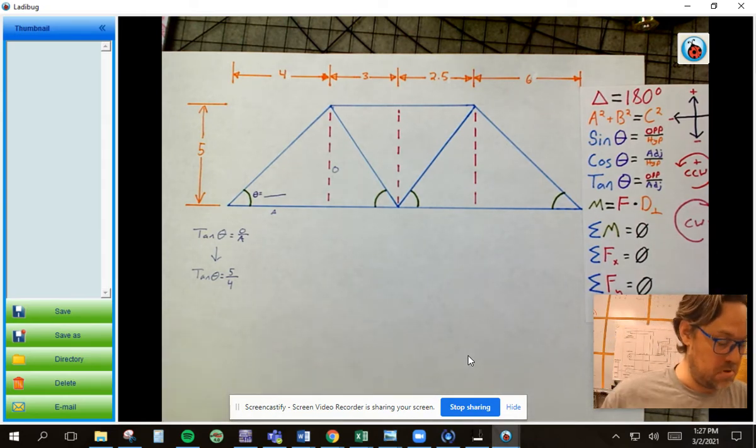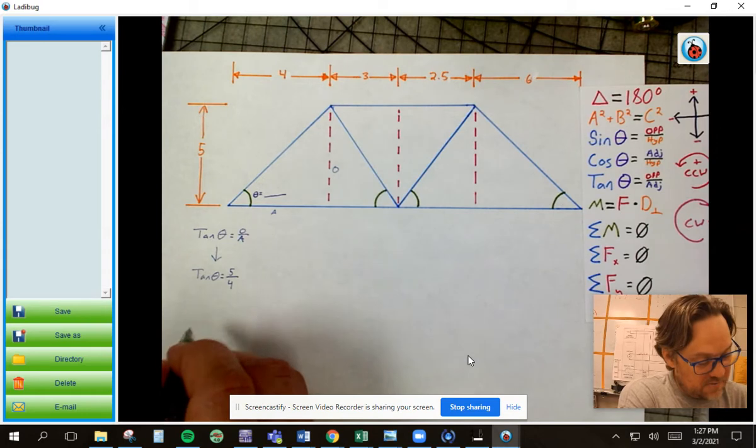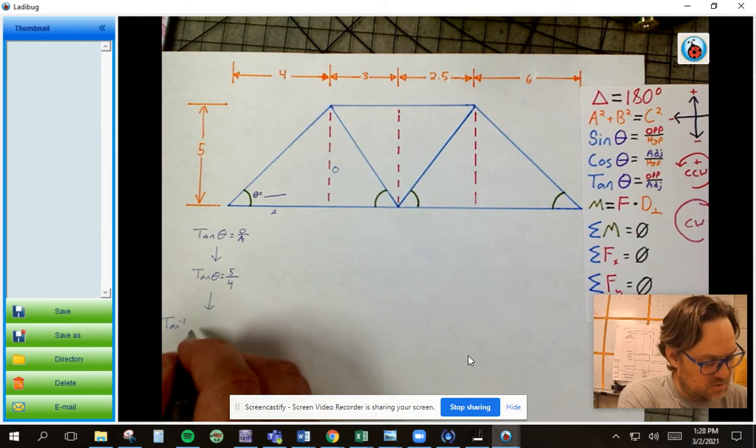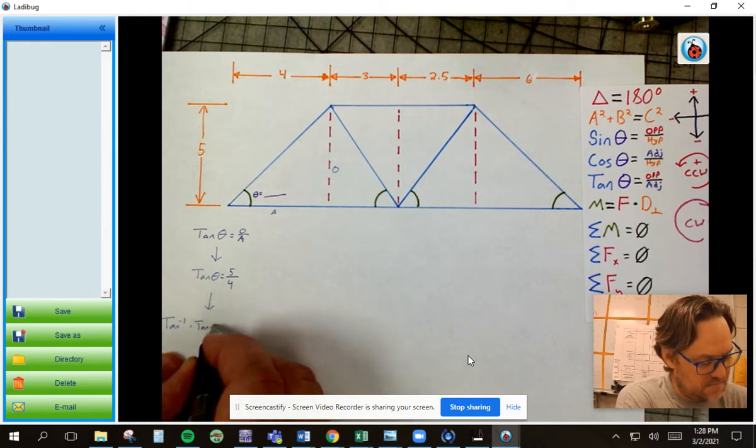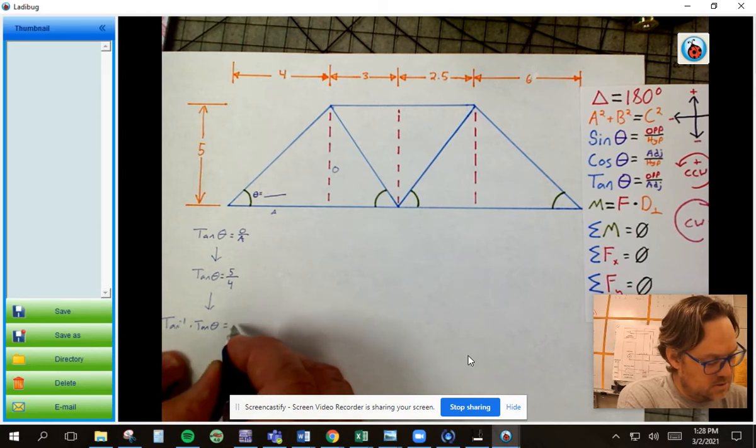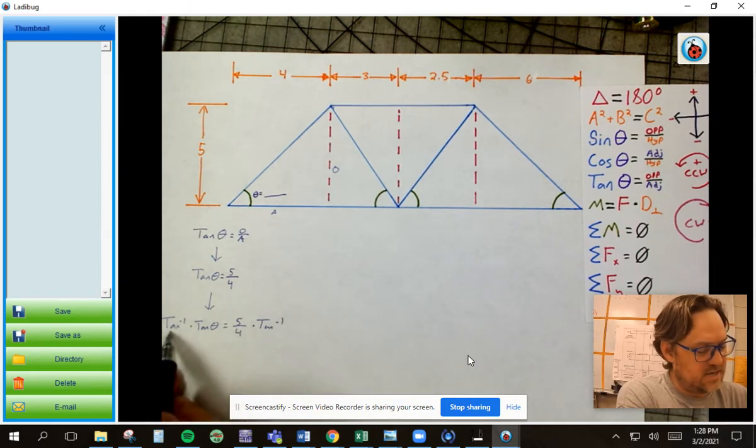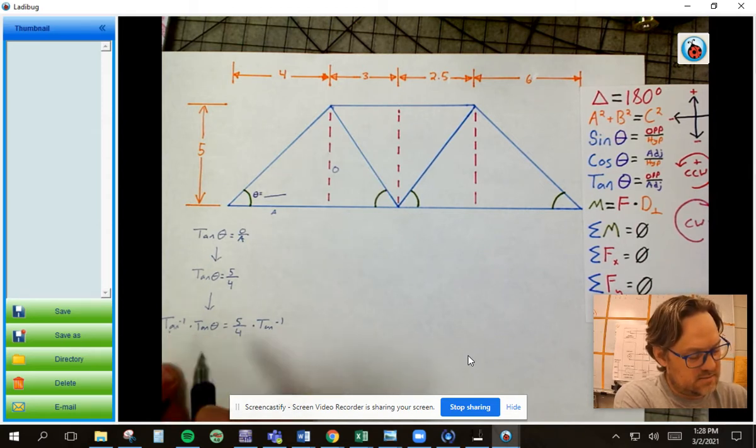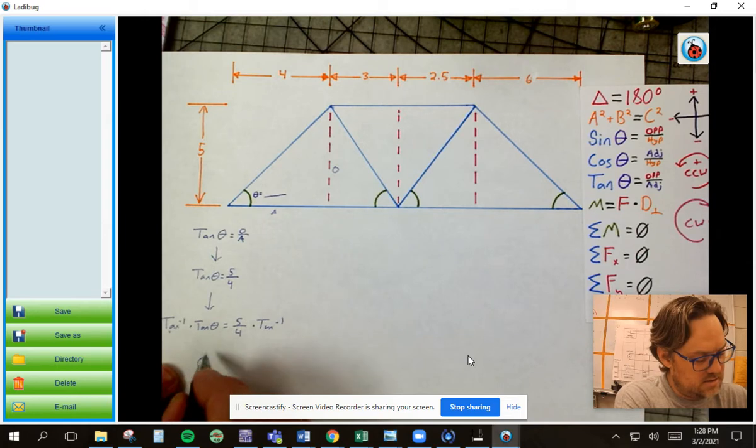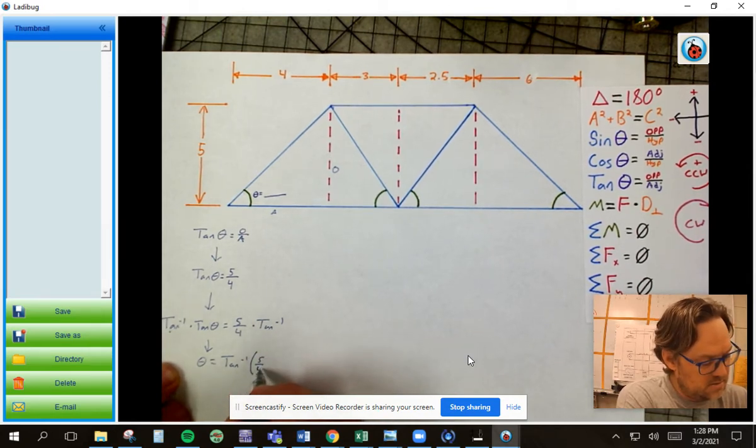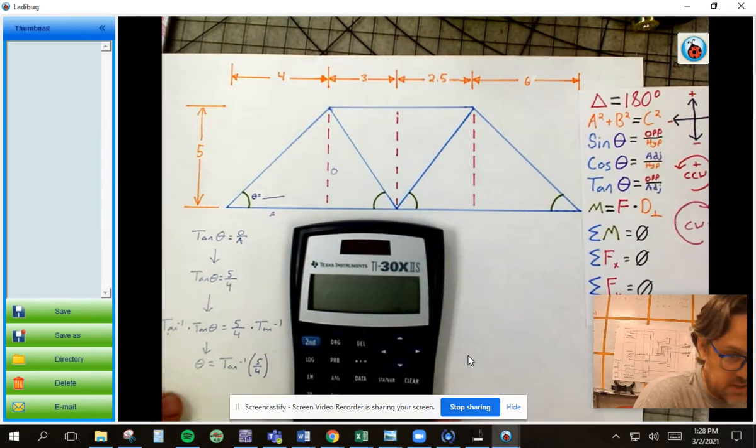Inverse tangent. So if I take that, and this is not really multiplication, but we're going to act like it is because you guys are used to that, right? What you do to one side of the equation, you have to do to the other side of the equation. So I'm going to write it out like that. So if I've got tangent on this side, that isolates and it leaves me with theta is equal to, and I'm going to rewrite this a little bit different. I'm going to flip it around. And then when you put that in your calculator, it's going to look like that.